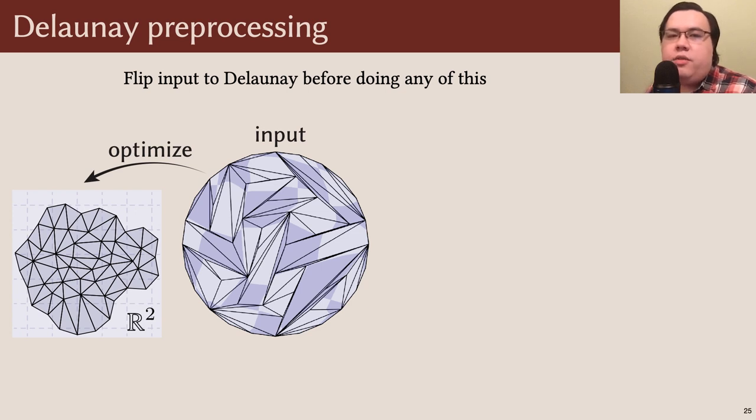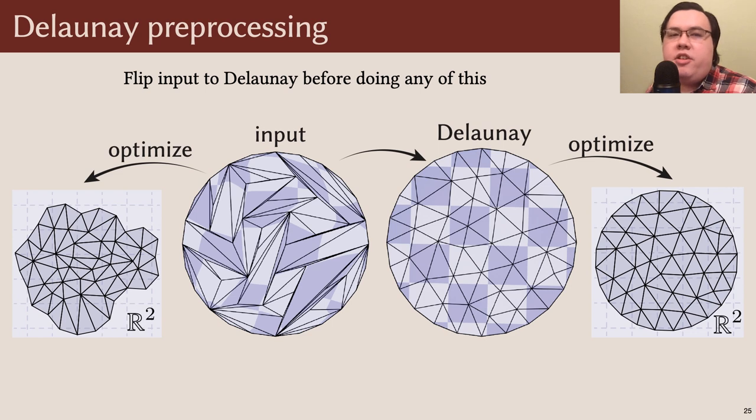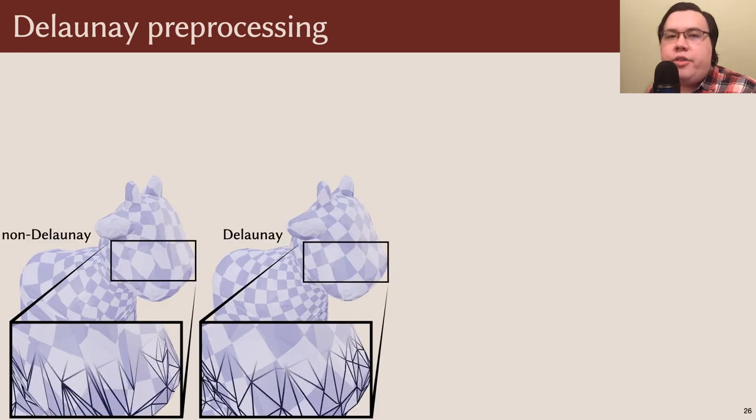On the other hand, if we first flip to an intrinsic Delaunay triangulation, then the optimization correctly concludes that the optimal scale factors are all zero. As a less trivial example, here's a low quality mesh. Again, we see that if we feed the non-Delaunay input into the optimization, we get a distorted mapping to the plane, whereas if we first flip to Delaunay, we obtain a nice parameterization.